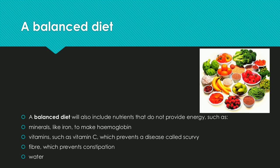A balanced diet also includes nutrients that do not provide energy, such as minerals like iron, which is used to make hemoglobin; vitamins such as vitamin C, which prevents scurvy; fiber, which prevents constipation; and water, which is required for many enzyme reactions and protein synthesis.